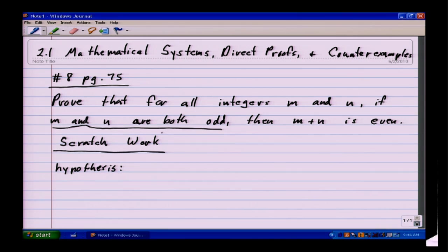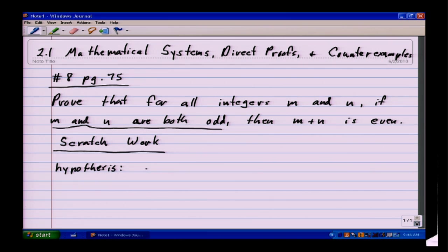We know that m and n are both odd, and we have a way to specify that an integer is odd. We can say m is odd if there exists an integer, call it k1, so that m is equal to 2k1 plus 1.